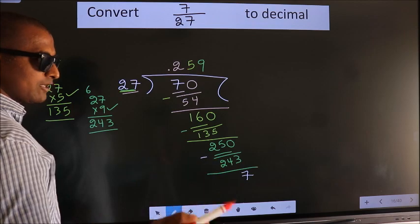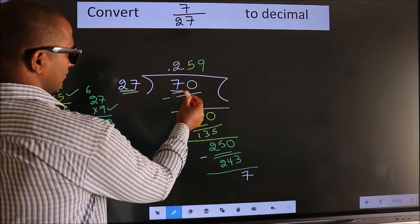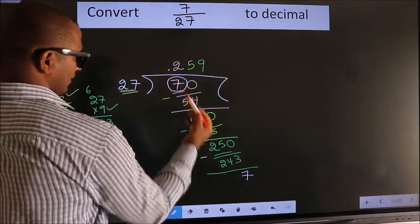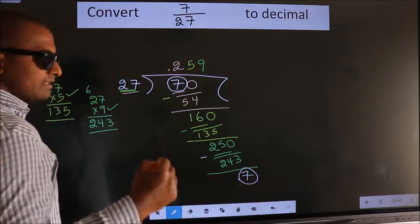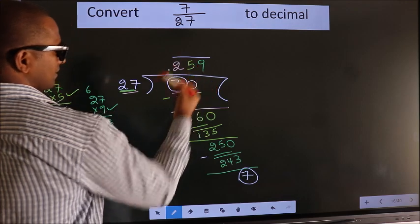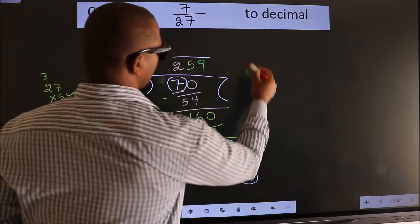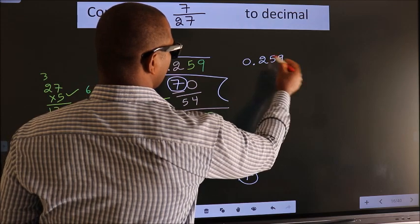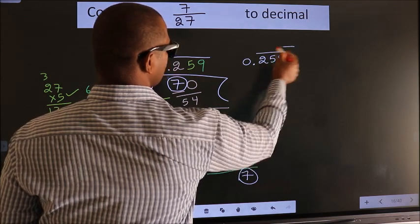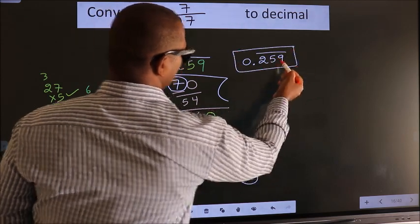Now observe, earlier we had 7, and we got 7 again. That means we get a bar on these three numbers. Therefore, our answer is 0.259 with a bar on these three numbers. This is our answer.